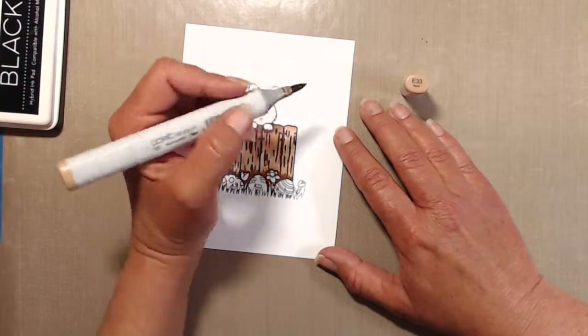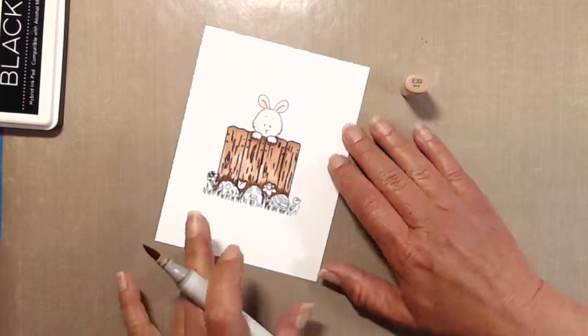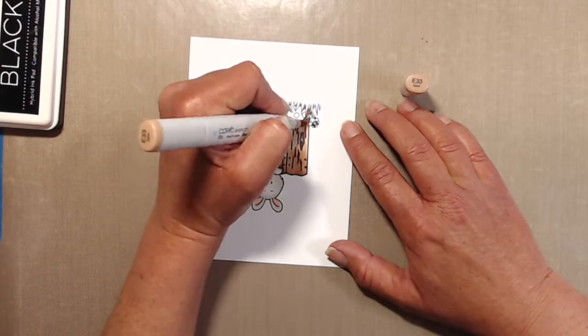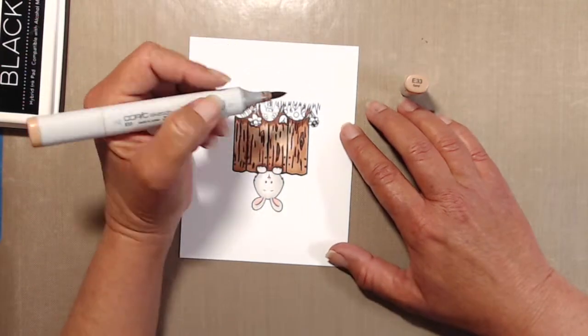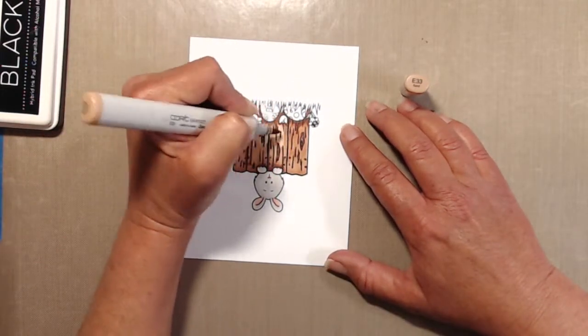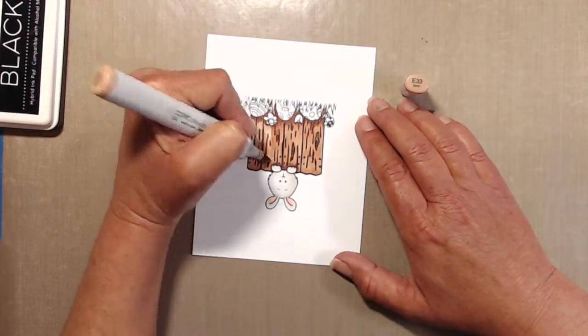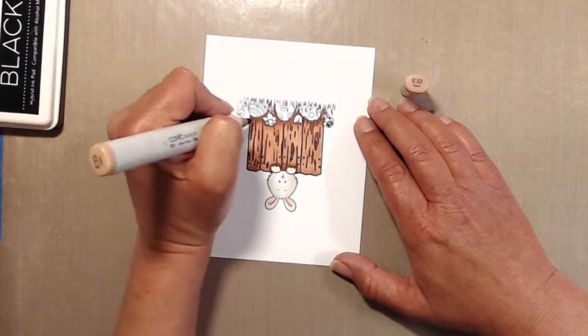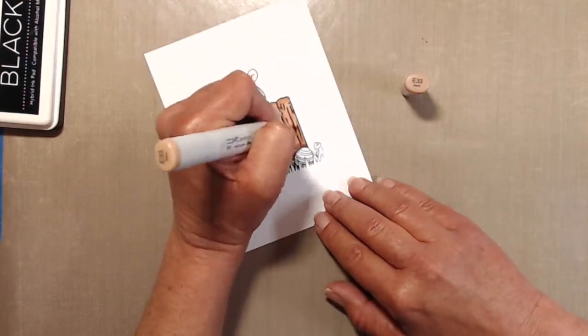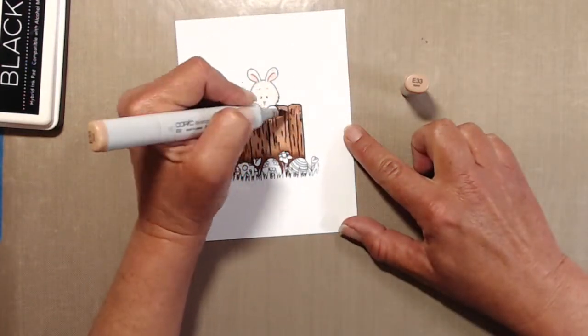While I was coloring the fence, you'll notice that I'll kind of work from the top down to about the middle of the fence, and then I turn the paper and start pulling towards me from the bottom up. That kind of helps me keep within the lines so that I have less cleanup to do later on with a colorless blender.